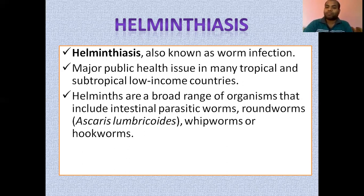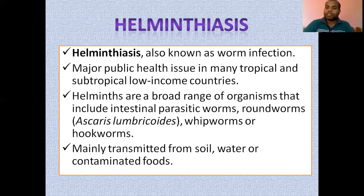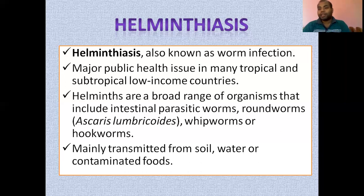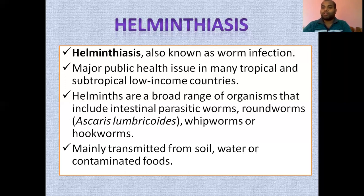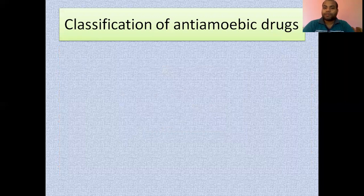Helminthiasis is also known as worm infection. As we have seen, amoebiasis or amoebic dysentery spreads from the orofecal route, and helminthiasis also spreads from contaminated soil, water, or contaminated fruits. The worm can enter your body and grow there, infecting organs such as the GI tract or other organs responsible for physical management.